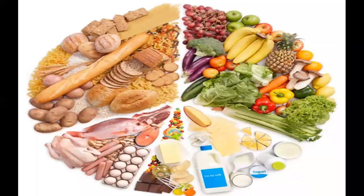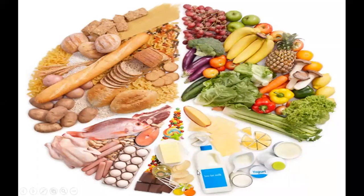We have bread, potatoes — a lot of starch. Then there are fruits here that will contain a lot of vitamins, minerals, and other macromolecules. We have fish, meat, eggs — these contain a lot of proteins. Then we have dairy products that will contain a lot of fats and also proteins. So from these different types of food, we obtain different types of macromolecules that the body requires for survival.